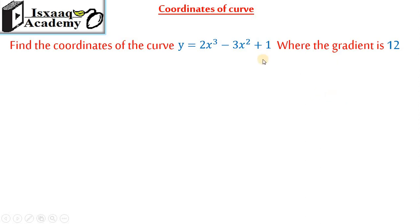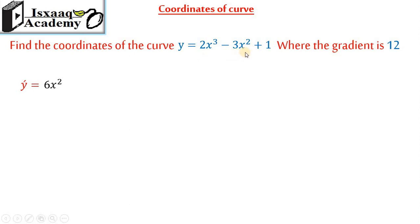Hello everyone, how are you doing? We are going to see this. 3, 2, and 6. 6x is equal to 1 because we are going to 6x squared. We have 3x squared equal to 1 over 6x. Now we are going to see: 6x plus 1 equals 0.